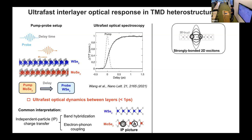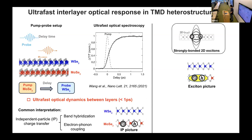This is because the electron-hole pair in the system is not independent. It will form an exciton — an electron-hole pair bounded by the Coulomb interactions, since one carrier is negative and one is positive. So what we need to study is not independent charge transfer, but rather this exciton, this electron-hole pair, transferring from the intralayer to the interlayer state across the two layers.